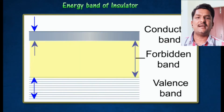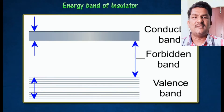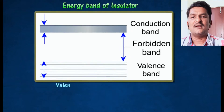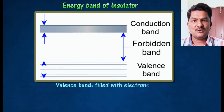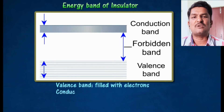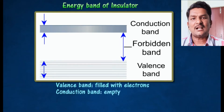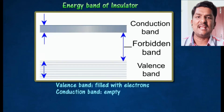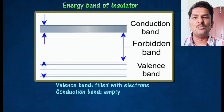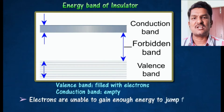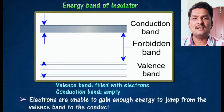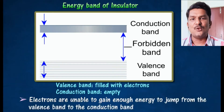In the case of an insulator, there is a large gap between the valence band and conduction band. Even if we give some energy, the electrons present in the valence band are unable to move to the conduction band, so the free electrons in the conduction band are negligible and there is no current.